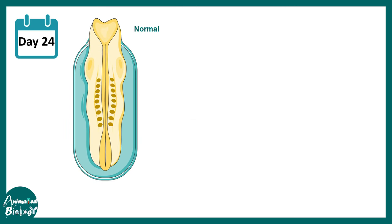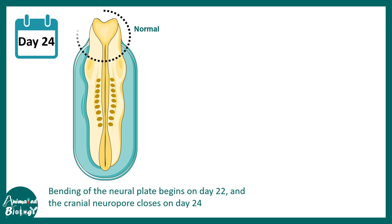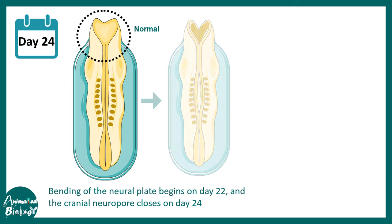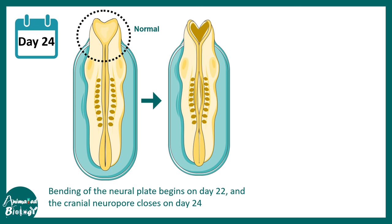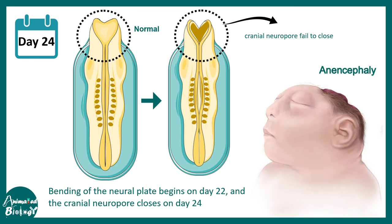This event of neural tube closure is really important for formation of the nervous system. In humans, the neural tube closure at the cranial end — towards the head of the embryo — happens at day 24. The neural plate begins to form at day 22, and eventually the neural pore closes at day 24. When closure doesn't happen properly, that leads to problems like anencephaly.